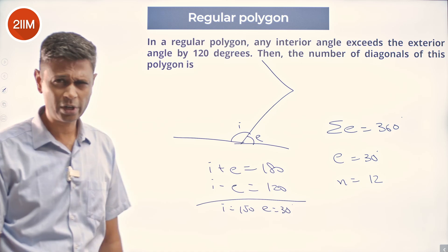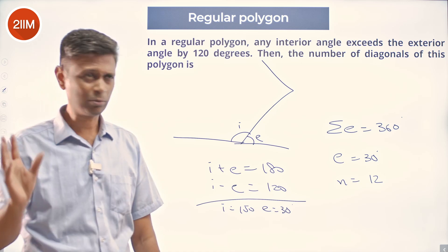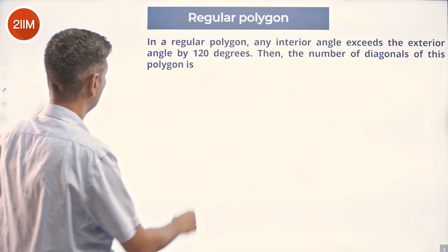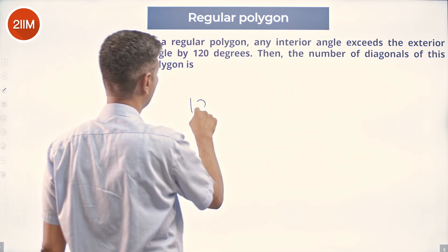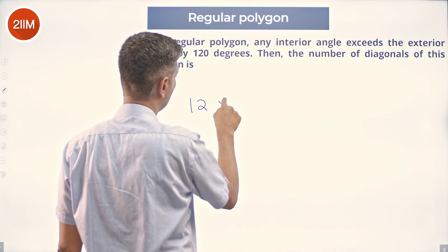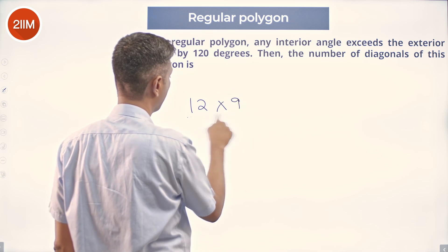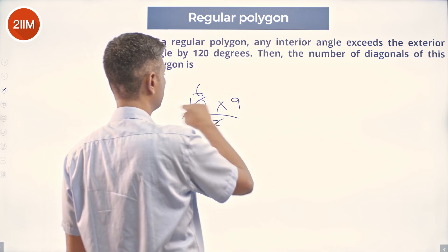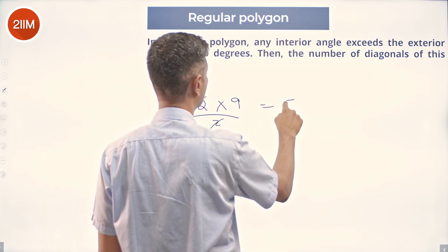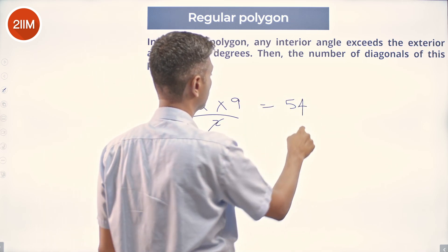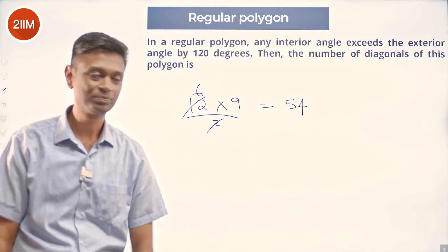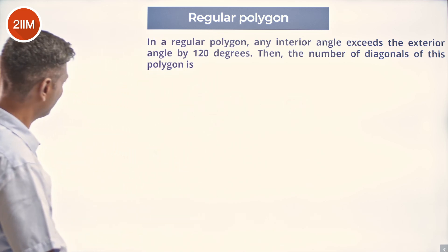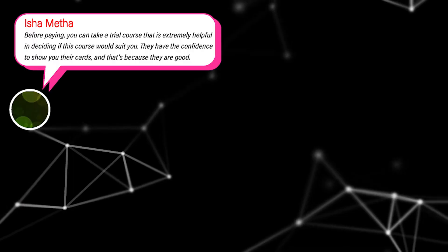A dodecagon, I think — I'm not sure about that. The number of triangles, using n minus 3 by 2, so basically doing 12 into 9 by 2: 1 into 6, 9 into 6, gives 54. A nice juicy freebie — you know the couple of formulas, just writing it down and getting a mark.